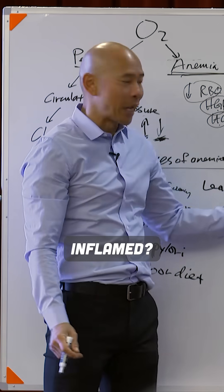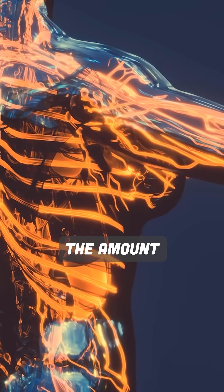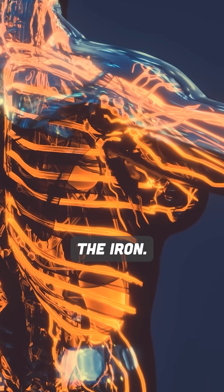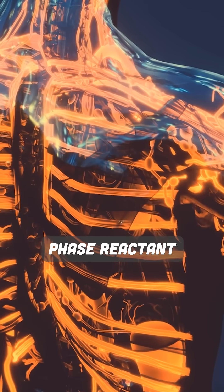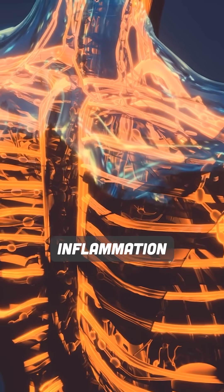But what happens when you're inflamed, your body will increase the amount of ferritin to kind of hoard the iron. So high ferritin basically is an inflammation marker. It's an acute phase reactant, which means you have some kind of inflammation response.